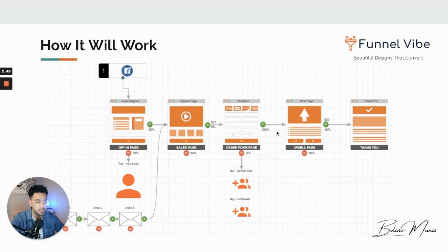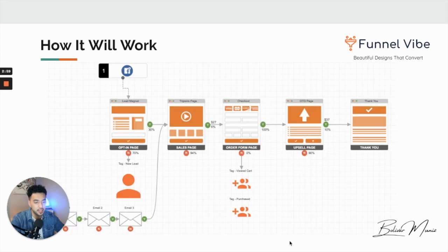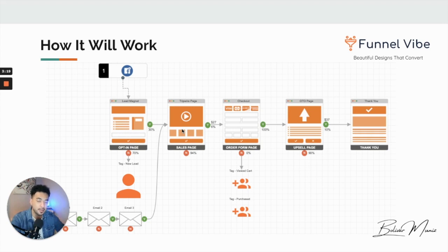So that's pretty much all we need — three tags and two email campaigns. Here's how it would work with a typical tripwire funnel. When they enter the lead capture page, we're going to tag them and trigger the welcome upsell campaign. Give some value, give them the download, and then try and push them to the tripwire page, where they'll get more information about the upsell you're trying to sell after the lead capture.